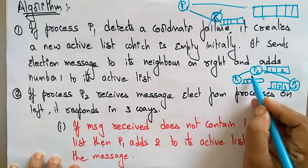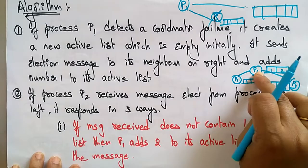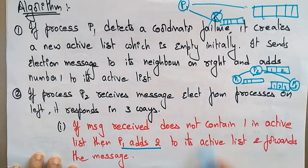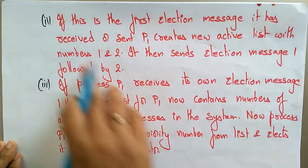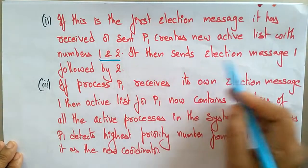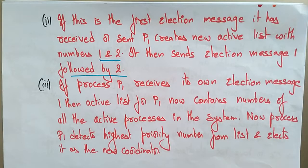If process P2 receives an elect message from the process on its left, it responds in three ways. First, if the message received does not contain P2's number in the active list, P2 adds its number to the active list and forwards the message. Second, if this is the first election message it has received or sent, P1 creates a new active list with the message number and forwards an election message. It simply selects the right-hand side processor and keeps adding priority numbers to the active list.